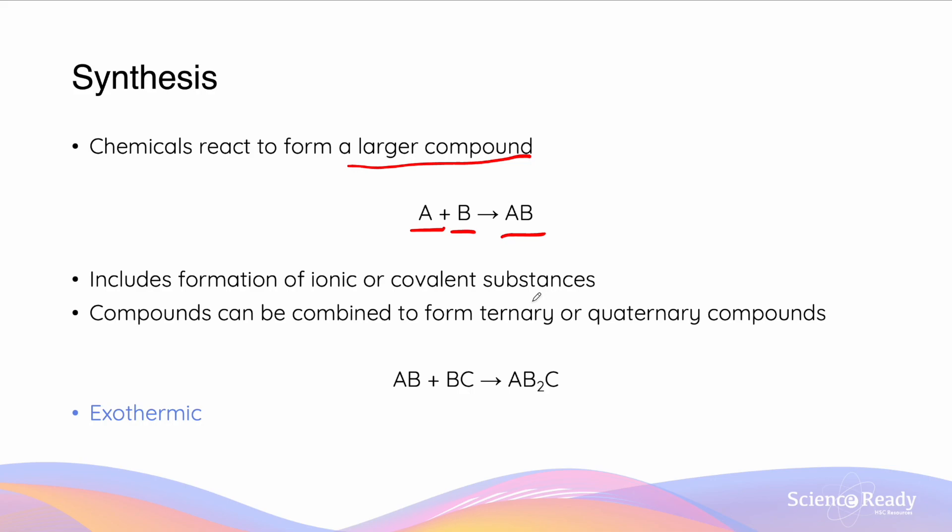Synthesis is not limited by the type of bonds which are formed, and it's applicable for both the formation of ionic or covalent substances. Furthermore, they're not limited to the formation of a binary compound like AB, you can also form a ternary or quaternary compound. So here is an example of the formation of the compound AB2C from AB and BC. Also synthesis reactions are exothermic reactions because they are forming bonds.